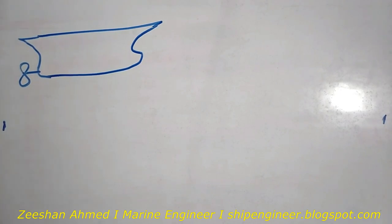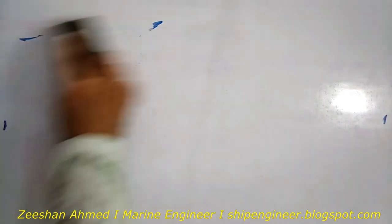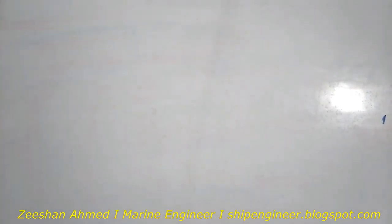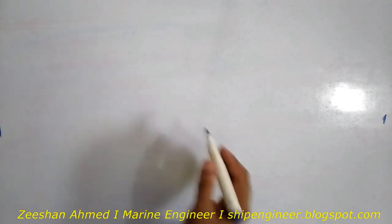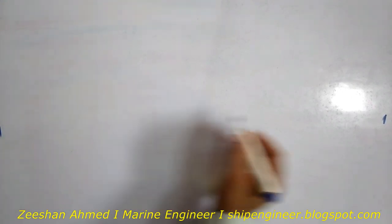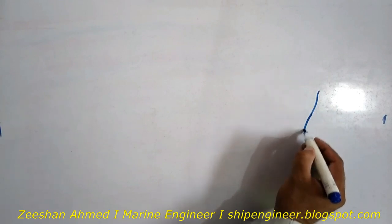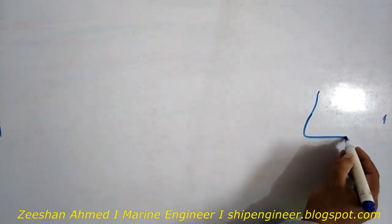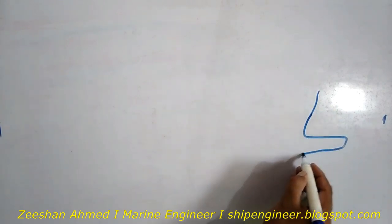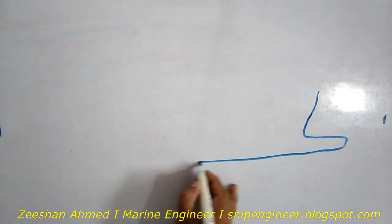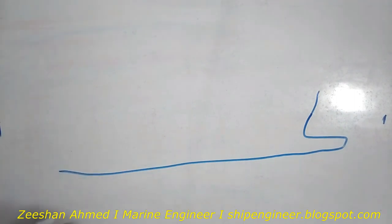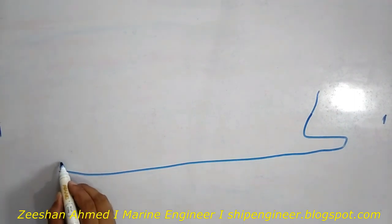That's not a good picture, that's why I'm removing it. I want to draw a good picture. This is the bulbous bow. And this is the keel of the ship. Here will be its propeller.